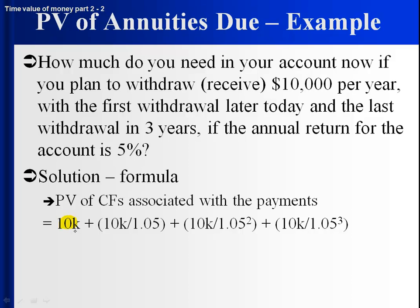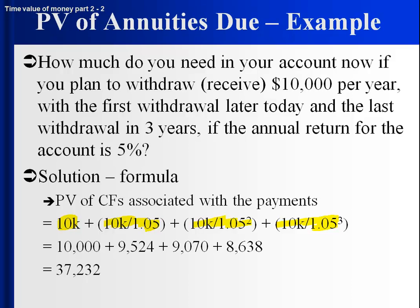So getting the present value today is equivalent to getting $10,000 today, $10,000 in a year, $10,000 in two years, and $10,000 in three years. Add them all up, it's like getting $37,232 today, and that's how much we'd need in our account.